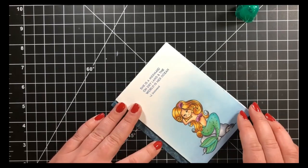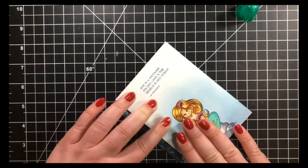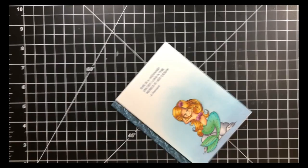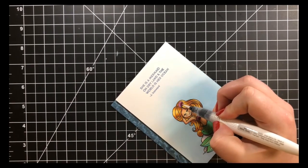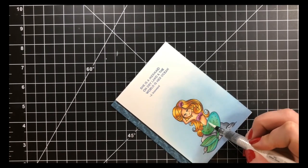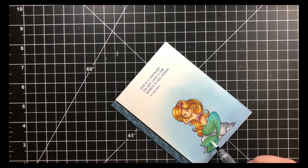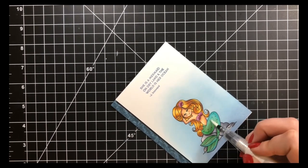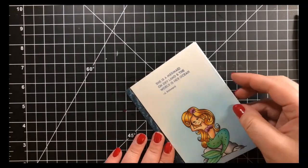Last, I took a Nuvo Sparkle Pen just to add a little bit of shimmer to her little seashells there as well as her tail. I went over her tail twice just to give it a little more shimmer and that is it for card number one using the Simon Says Stamp September 2018 kit. Thanks guys for stopping by and I hope you guys have a wonderful day.